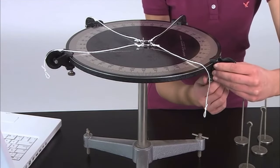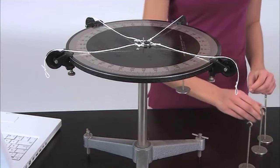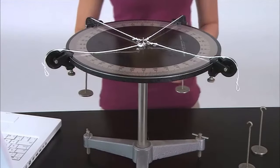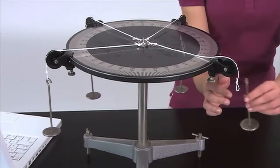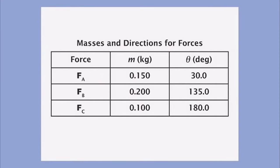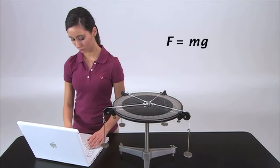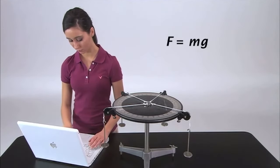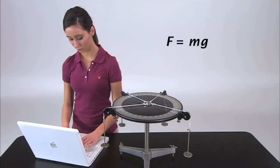Attach four pulleys to the force table and four strings to the ring. Hang a 50-gram mass hanger from each string. Label the pulleys and their associated hangers A, B, C, and E. The weights of masses hanging from the strings will exert forces on the ring in the directions of the pulleys. Record the masses and directions for the forces that will be applied by hangers A, B, and C, and record the value for the local gravitational acceleration. Calculate and record the magnitudes of the three forces that will be applied to the ring. The force in newtons is equal to the mass in kilograms times the local gravitational acceleration in meters per second squared.